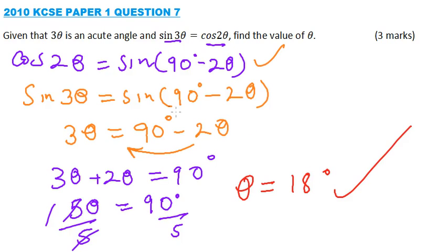And that is the correct answer. So it means that 3 theta equals 54, which is an acute angle and satisfies our equation there as given in our statement.